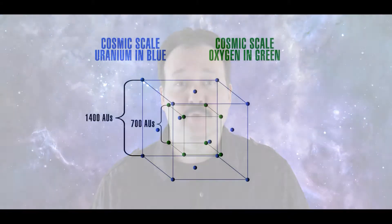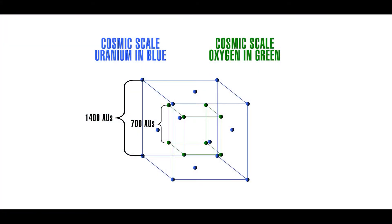The length of the blue cube's uranium edge is 1400 astronomical units. The length of the green cube's oxygen edge is 700 astronomical units. Compare these lengths to the 80 astronomical unit diameter we pictured for our solar system.